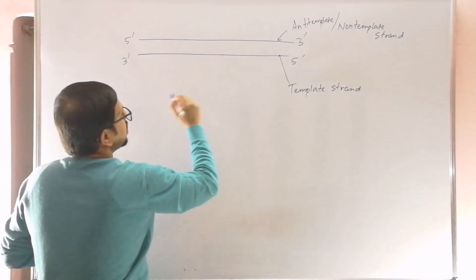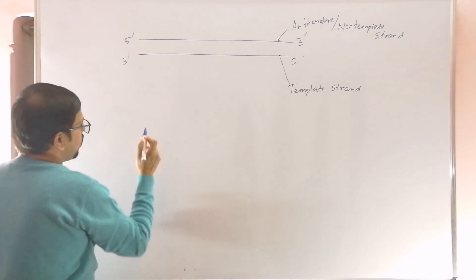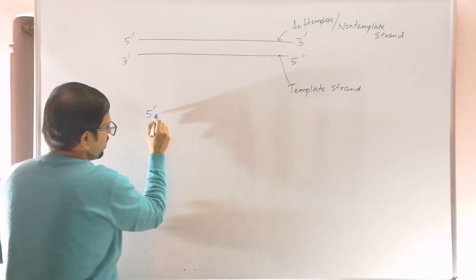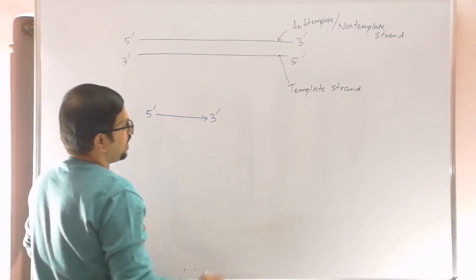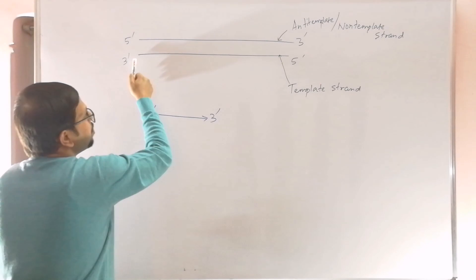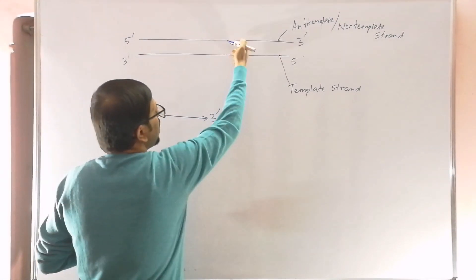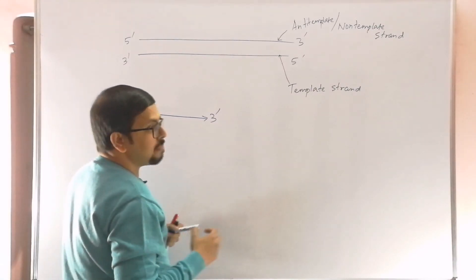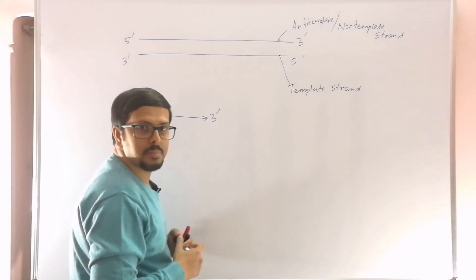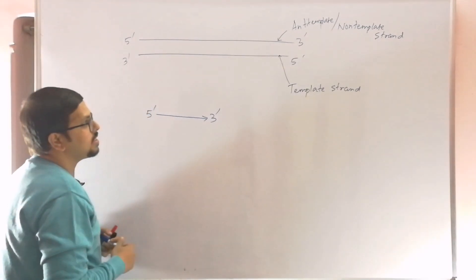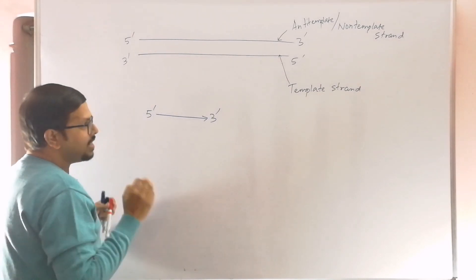RNA will be synthesized only in the 5 prime to 3 prime direction, and it will be synthesized upon the 3 prime to 5 prime template strand. Which strand will be transcribed depends on the position of the promoter and terminator. Promoters are the sites where transcription initiates.